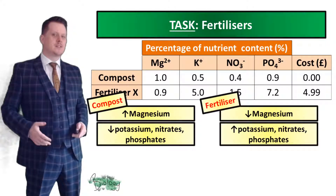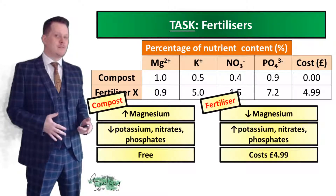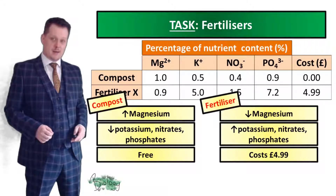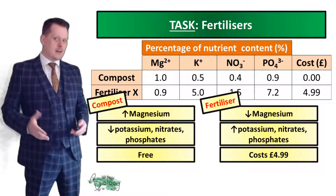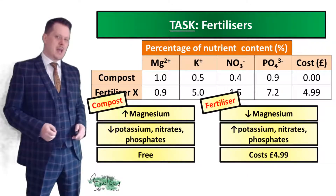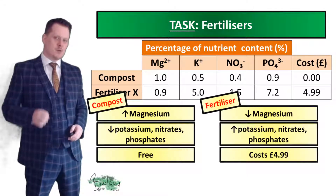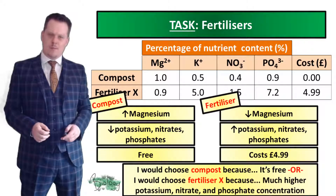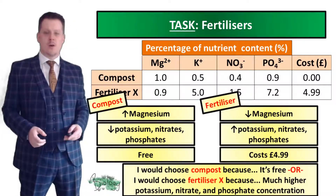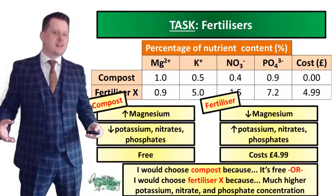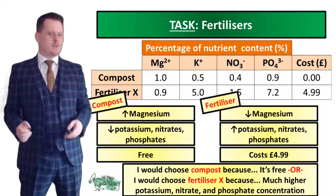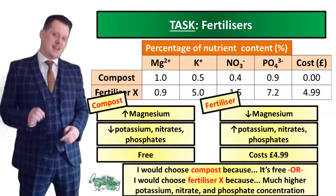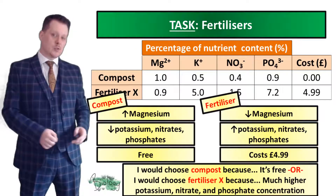The next thing to evaluate is cost. The compost is free whereas the fertilizer costs £4.99. These are all the comparisons we can make, but we still need a final conclusion. There's no right or wrong answer — you could say you'd choose compost because it's free and has more magnesium, or you could choose fertilizer X because it has a much higher concentration of potassium, nitrates, and phosphates. Your answer can only be considered correct if you have justified it using the comparisons we made.